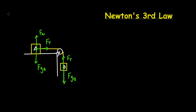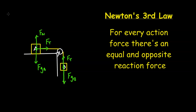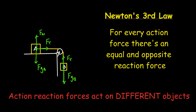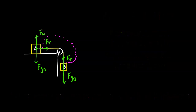Now let's apply Newton's third law: for every action force, there's an equal and opposite reaction force. You might think FN and FGA are action-reaction pairs since they appear equal and opposite, but Newton's third law acts on different objects — those two forces act on the same object. Similarly, FT and FG acting on the same object are not action-reaction pairs. One actual action-reaction pair here is the two tension forces on either side of the pulley — same magnitude, opposite direction.